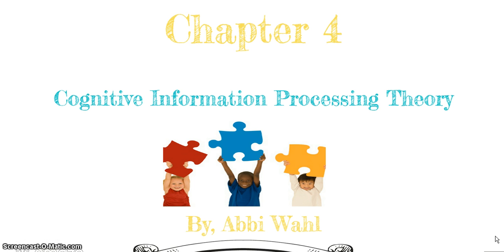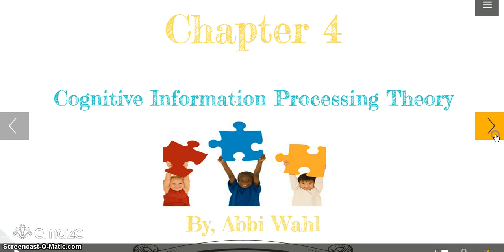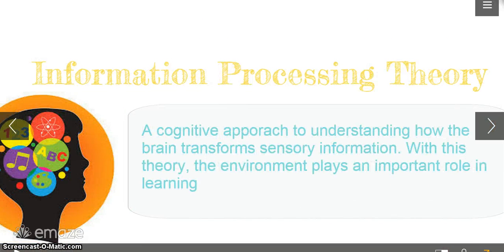What is Cognitive Information Processing Theory? It is a cognitive approach to understanding how the brain transforms sensory information. This theory has one thing in common with the behavioral theory in regards that the environment plays an important role in learning in both of these theories.